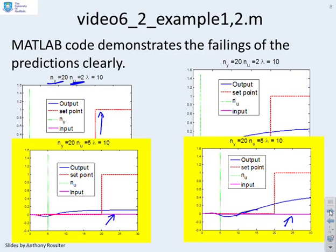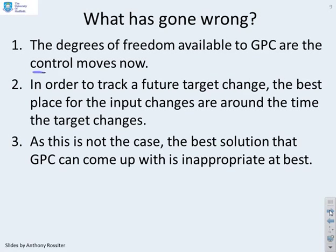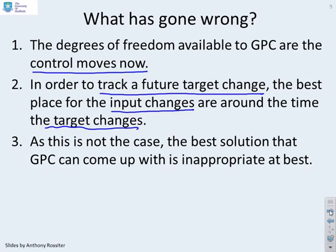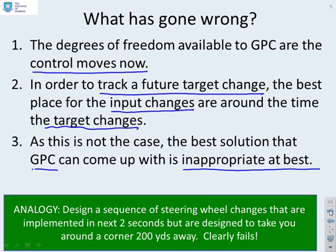What has gone wrong? The degrees of freedom available to GPC are the control moves now. In order to track a future target change, the best place for input changes is around the time the target changes — and since this is not the case, the best solution GPC can produce is inappropriate at best and could be very poor. An analogy: if asked to design steering wheel changes implemented only in the next two seconds, designed to take you around a corner 200 yards away, you clearly cannot get a sensible solution. If you move the steering wheel now while the road is still straight, you will go off the road; and when you reach the corner 200 yards away, you have no steering moves left and cannot get around it. This is clearly madness.